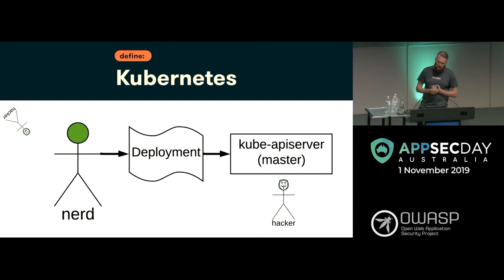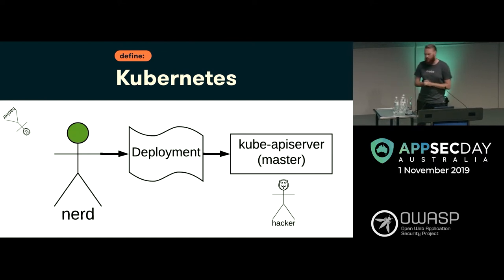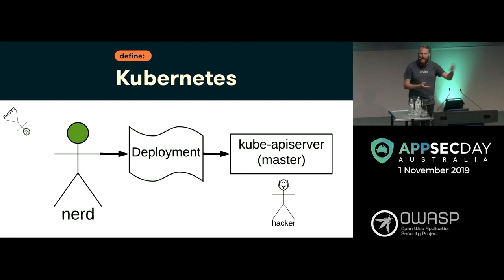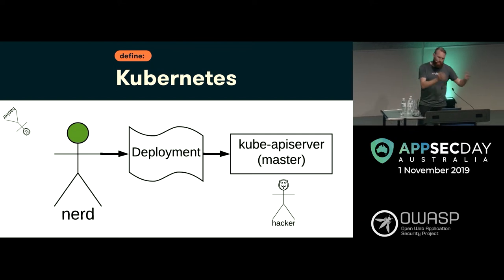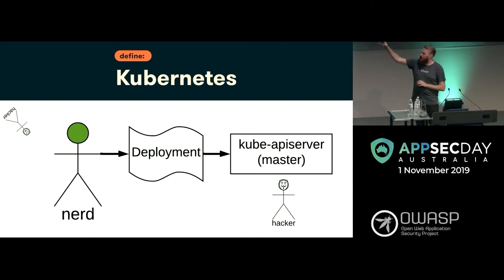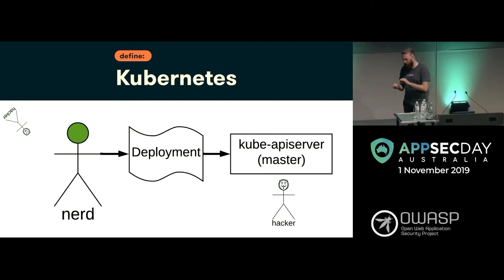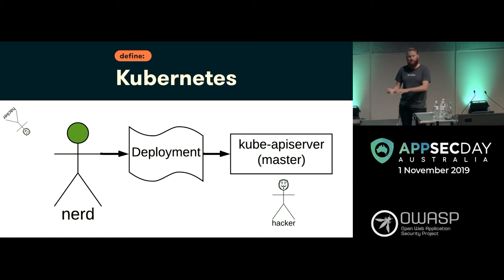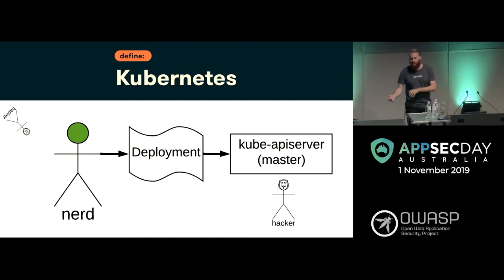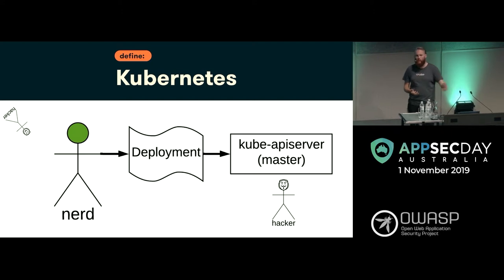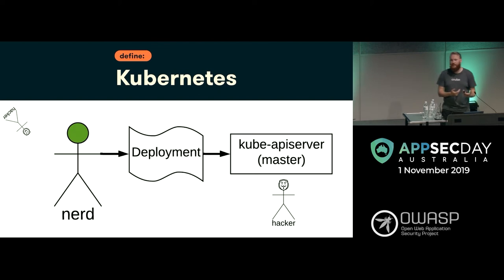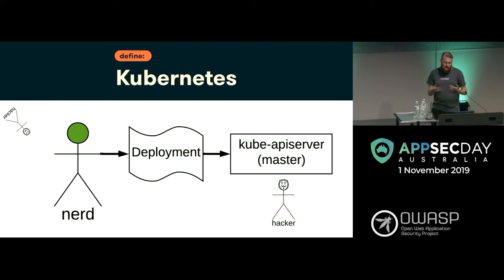I'll pause here to talk about the threat model. We're not talking about malicious administrators — they already have admin, root level on the cluster and can do whatever they want. We're also not talking about unauthenticated hackers. The sorts of people in our threat model are people who have the ability to deploy: pen testers who've stolen credentials, people who've found a bug with the ability to trigger deployments, systems that can deploy, or most commonly, developers who deploy something but accidentally misconfigure it. That's the most common case and the threat we're trying to prevent.